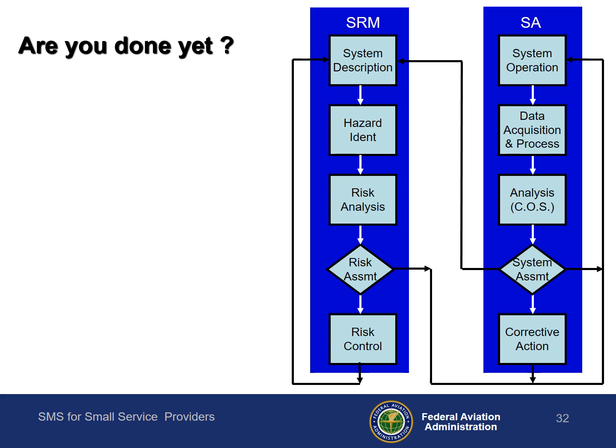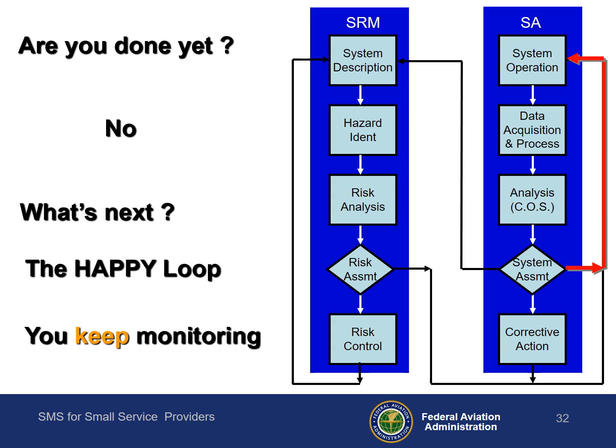Are you finished with the safety assurance process yet? Not quite. So what's next? The happy loop. Looking at the system in operation, acquiring data, analyzing that data, and assessing that the system is doing what it's supposed to do. You continue to monitor your risk controls on a routine basis.